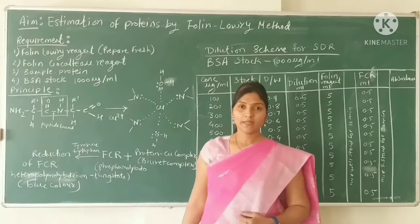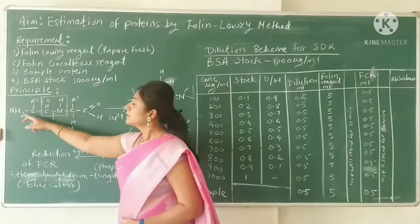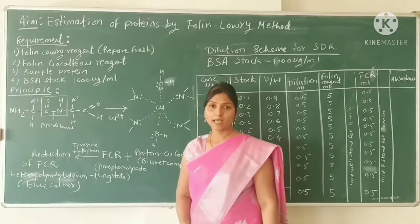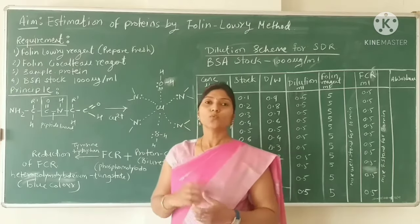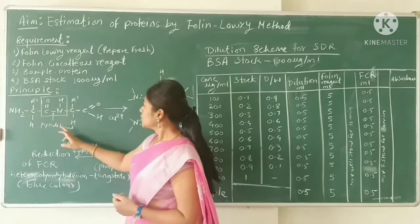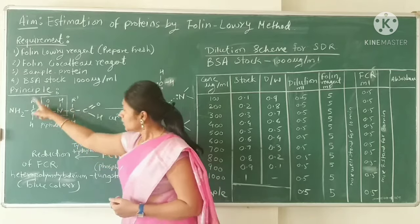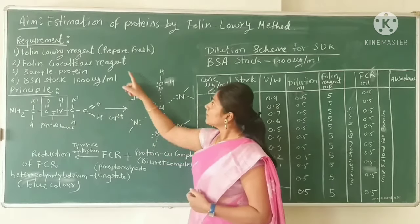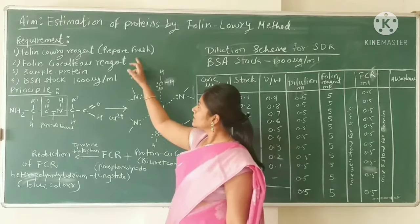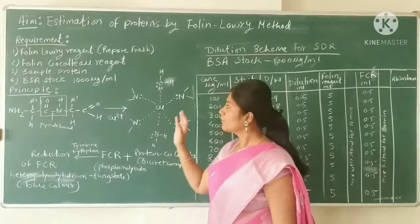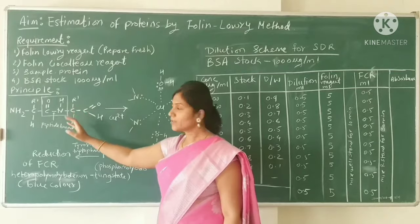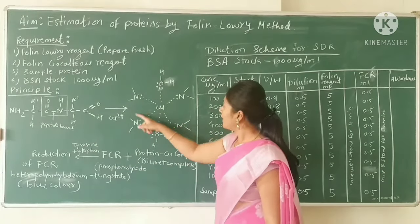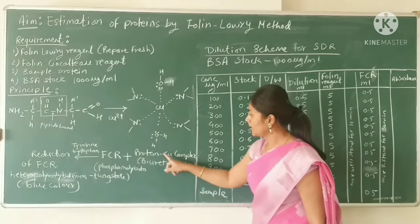Now let's see the principle of this method. Here is the structure of a peptide — proteins are made up of amino acids linked by peptide bonds, which are C-N bonds. This is what is present in your sample. When you add the Folin-Lowry reagent first, the copper in the reagent will chelate with the protein.